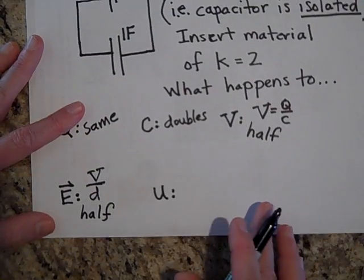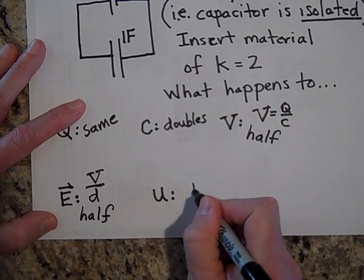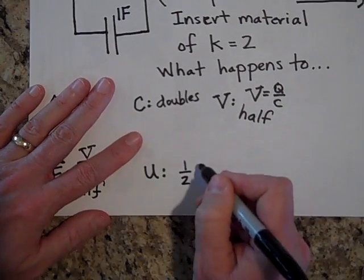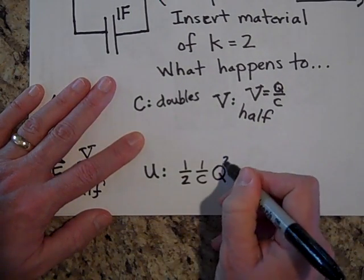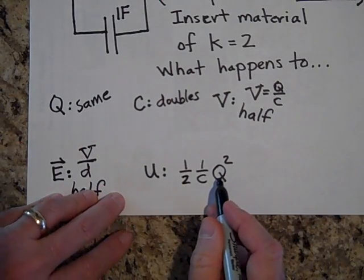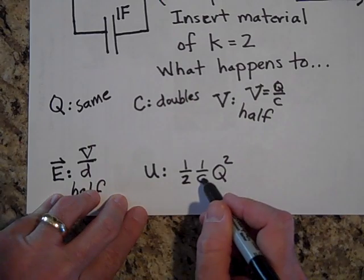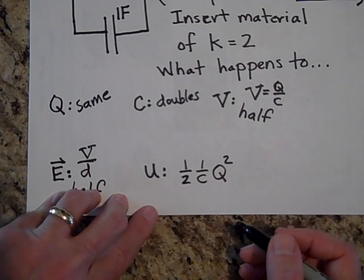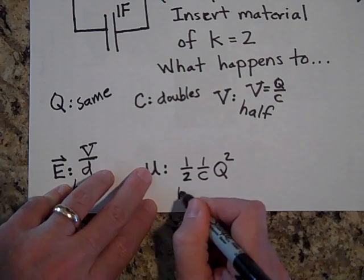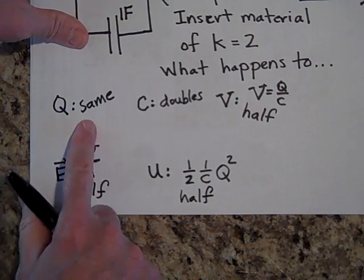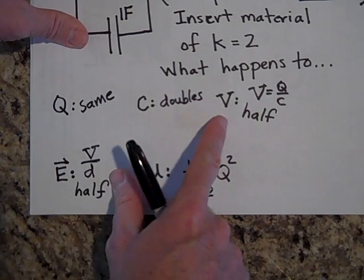For the energy, I'm using U = ½(1/C)Q² — or equivalently Q²/2C — because Q remains unchanged. Since C doubled, U goes down by a factor of two, so U is half. To summarize: Q same, C doubled, V half, E half, and U half.